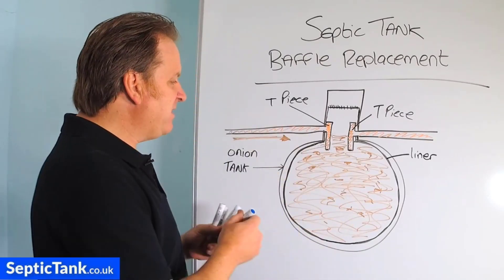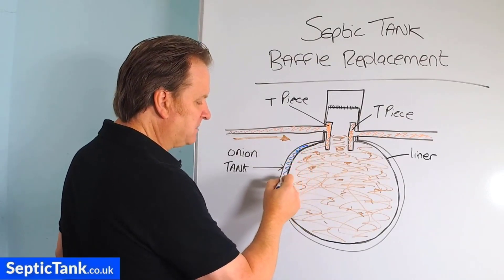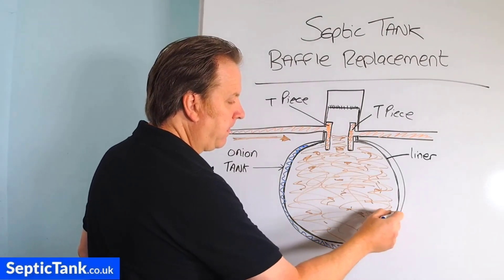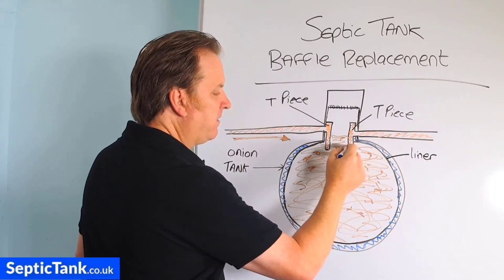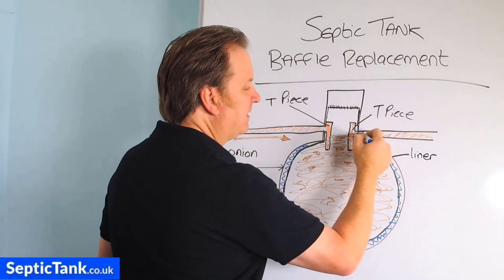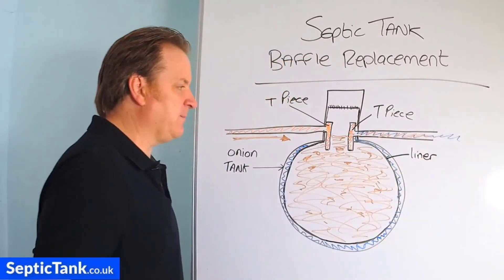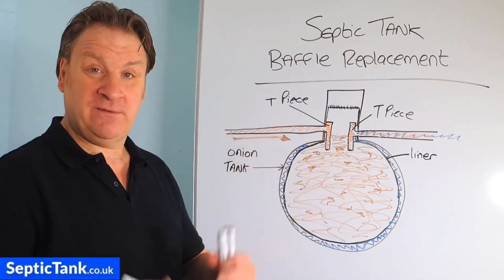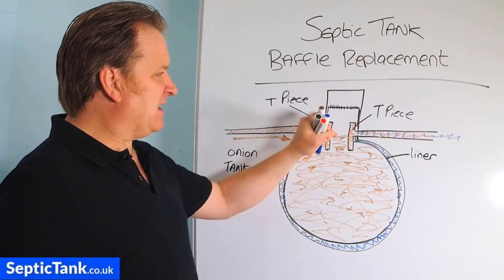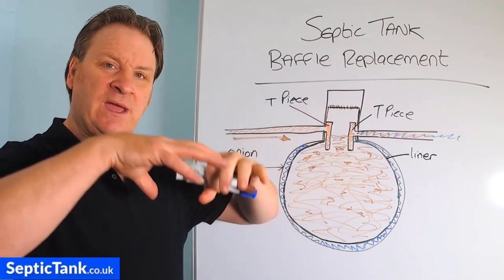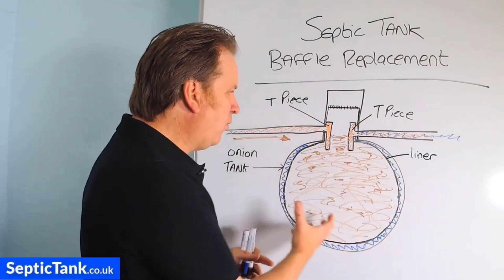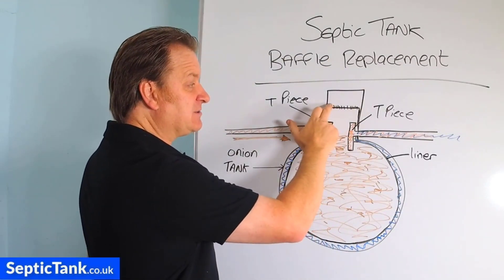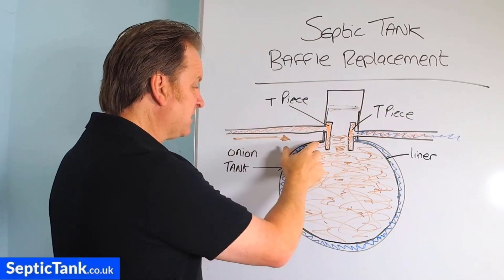To prevent that, they put in the tank what's called a baffle. This black liner in the onion tank is a classic example of a baffle. A baffle is basically a partition, divide, or separator that separates the liquid from the solids. The wastewater comes into the tank, swirls around in a current, and then through the baffle gets separated. The wastewater goes on the inside of the liner, comes up, enters the outlet pipe, and is discharged into the soakaway.